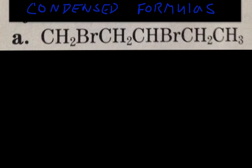For the first one, all you have to do is establish what's on a particular carbon. You look at the carbon first, and whatever's in front of that carbon is attached to that particular carbon. Remember that in organic chemistry, carbon has four valence electrons and wants to make four bonds. Carbon will be doing sharing, so the bonds will be covalent. For the very first carbon, you write the C down — you have two hydrogens here, so they will be on that particular carbon.